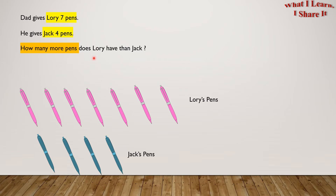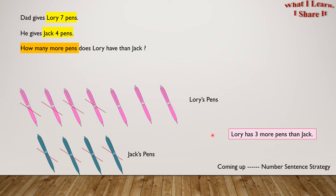How many more pens does Lori have than Jack? Let's start pairing one of Lori's pens and one of Jack's pens. We pair them up: first, second, third, and fourth — matching one of Lori's with one of Jack's each time. So Lori has three more pens than Jack. Yay, we solved the problem!